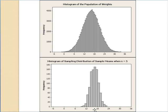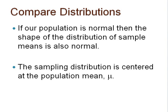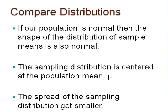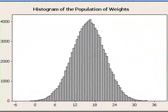In addition, we saw the center of the sampling distribution was approximately 16, but the spread of the sampling distribution got smaller when comparing it to the population distribution above. This normal population distribution represents the theoretical population of the weights of the bags of pretzels. This histogram represents the population we worked with in the last video — the 100,000 weights.